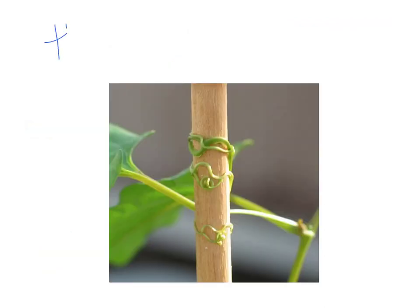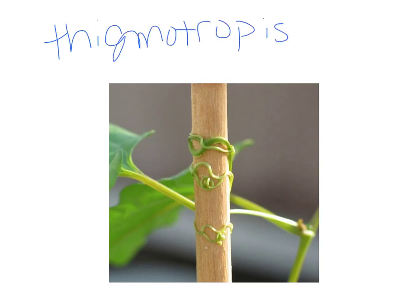The last tropism we're going to talk about is thigmotropism — the growth response to touch. This is extremely important in climbing vines. As they touch the stake they're going to wind around, they will grow in that direction in response to touch. This is an example of positive thigmotropism. A negative thigmotropism would be if something touched the plant and it started to grow away from that.